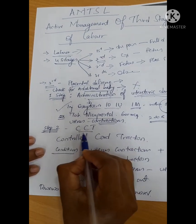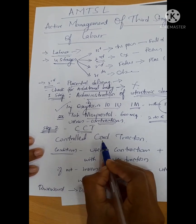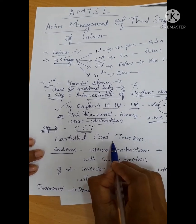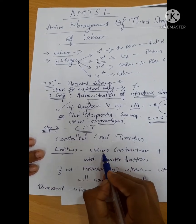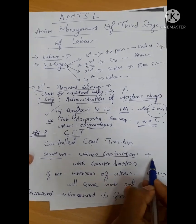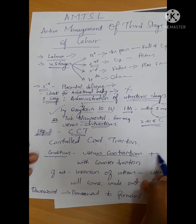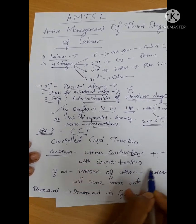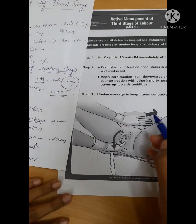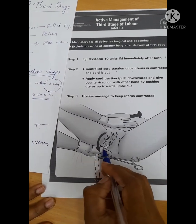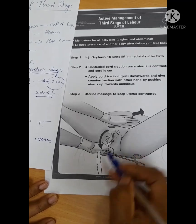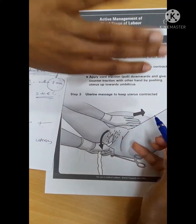Step two is CCT, Controlled Cord Traction. Before applying this, you should check that uterine contractions are present. Then with counter traction, what is counter traction? Counter means just opposite. The placenta is coming downward, so with one hand above, on the uterus above the umbilicus, you should push.